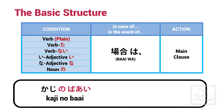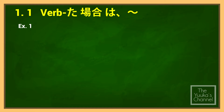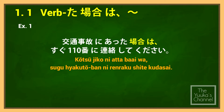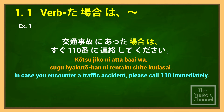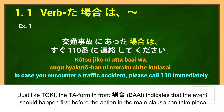Example: kaji no baai — in case of fire. Let's review some examples from the book. Note: just like toki, the ta form in front of baai indicates that the event should happen first before the action in the main clause can take place.